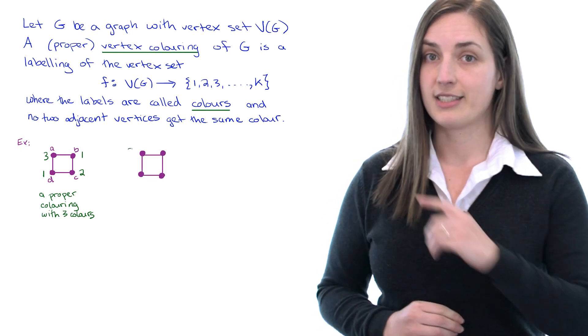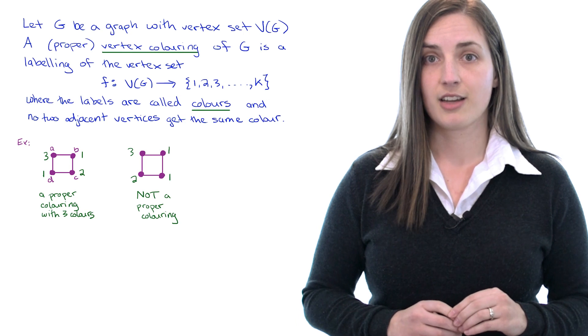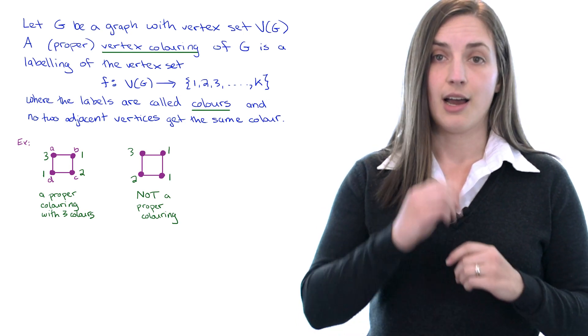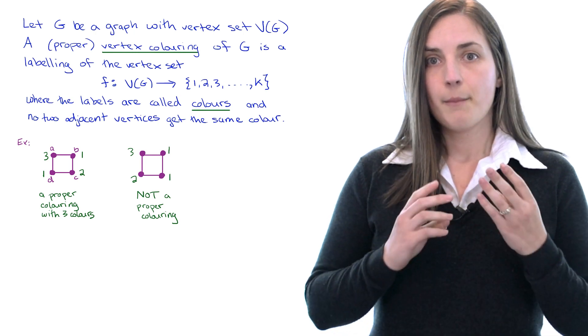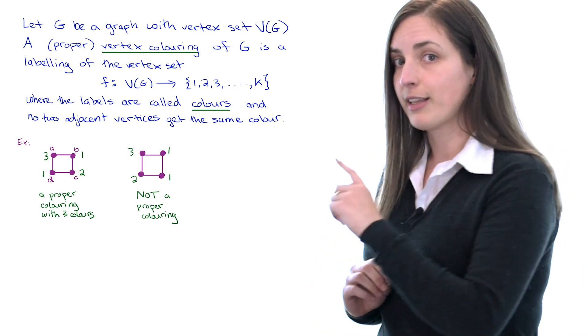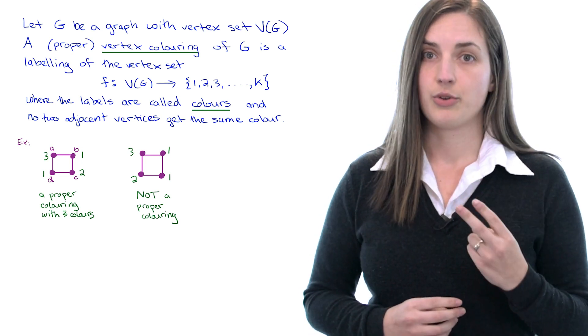If instead we label the vertices like this we can see that it's not an example of a proper vertex coloring because we do have a pair of adjacent vertices which were assigned the same color. But you may notice that the proper coloring that I gave used three colors and I can do this with only two colors.